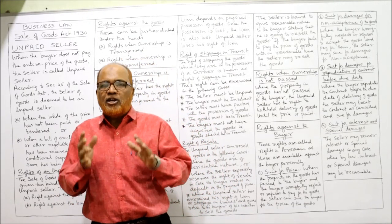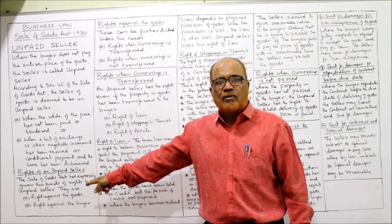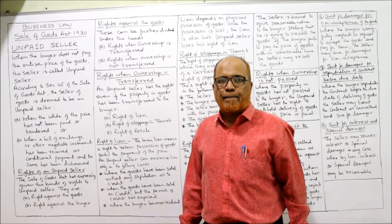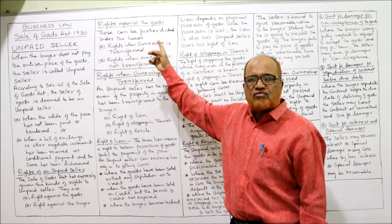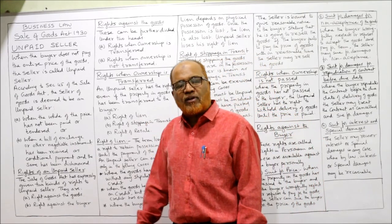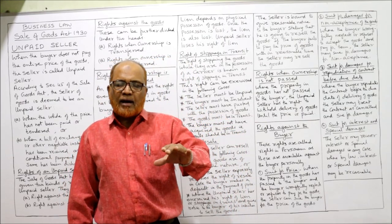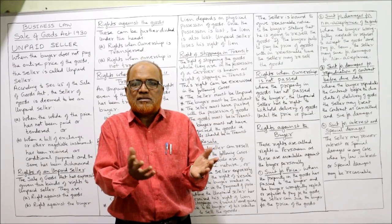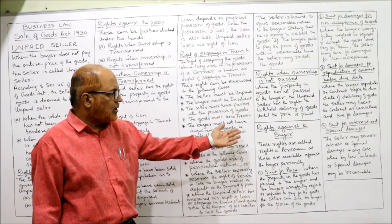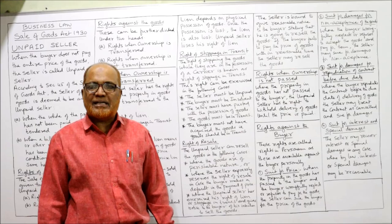So in this video I have explained in detail the meaning of unpaid seller, who is an unpaid seller, and what are his rights. The Sale of Goods Act has expressly given two rights: right against the goods and right against the person. Right against goods has two types — when ownership is transferred (three rights: lien, stoppage in transit, resale) and when ownership is not transferred (one right: withhold delivery). Rights against the buyer personally include suit for price, suit for damages for non-acceptance, suit for damages for repudiation, and suit for interest and special damages.